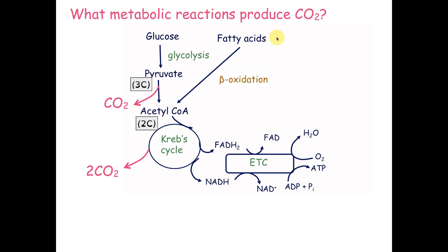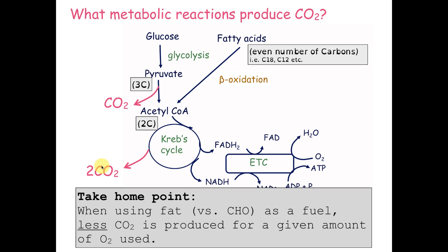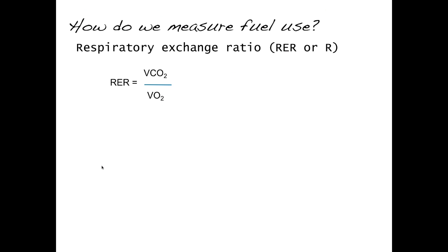Now, if our starting molecule is a fatty acid, all fatty acids have even numbers of carbons — either 18, 12, or 22 carbons. When they go through the process of beta-oxidation to form acetyl-CoA, there is no carbon dioxide lost. So a C18 fatty acid eventually becomes 9 molecules of acetyl-CoA with no carbon dioxide lost. That means for a given amount of fatty acids per amount of oxygen consumed, there's going to be less carbon dioxide formed. Our take-home point: when using fat versus carbohydrate as fuel, less carbon dioxide is produced for a given amount of oxygen used.